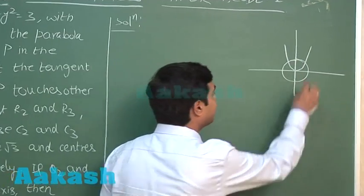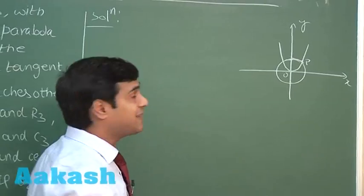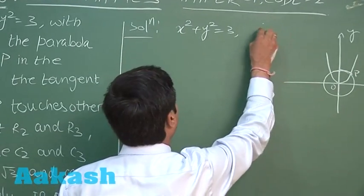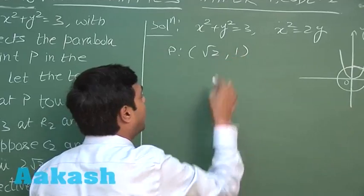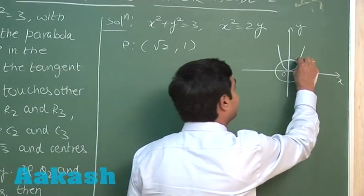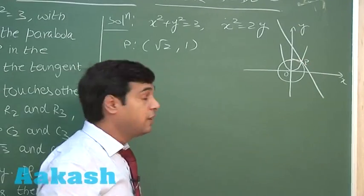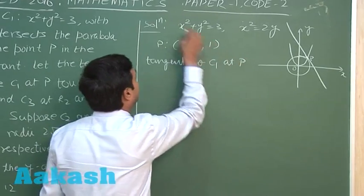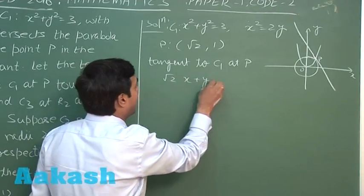These two curves intersect at some point P. Solving x² + y² = 3 and x² = 2y by substitution, we get point P as (√2, 1) in the first quadrant. A tangent is drawn at this point P to circle C1. The equation of the tangent to C1 at P is √2·x + y = 3.